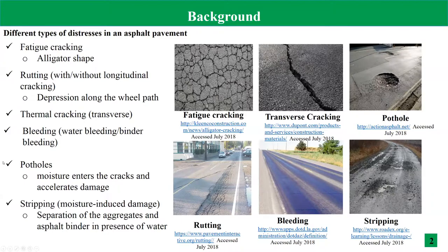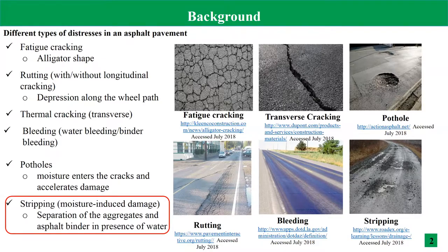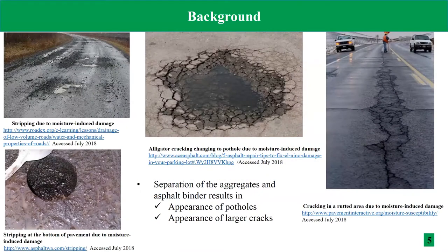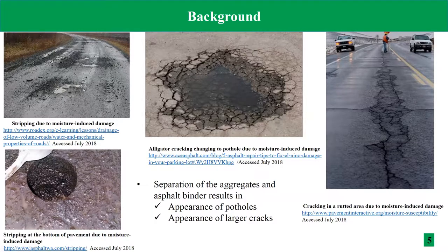As a quick background, there are several types of pavement stresses in asphalt materials, such as fatigue cracking, rutting, thermal cracking, bleeding, potholes, and stripping. In this presentation, I'm going to cover stripping, which is the debonding of the asphalt binder from aggregate — or cohesive failure of the asphalt binder — in the presence of water. Stripping may occur at different parts of the asphalt pavement and may cause different modes of failure.